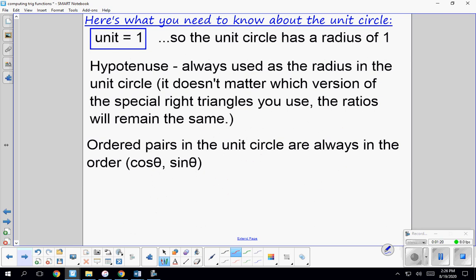So unit means one. So the unit circle has a radius of one. If you're looking at a value on an axis, remember that the coordinates are going to involve a one. The hypotenuse is always positive in the unit circle. And ordered pairs go in the order of cosine of sine. Just remember it's alphabetic.